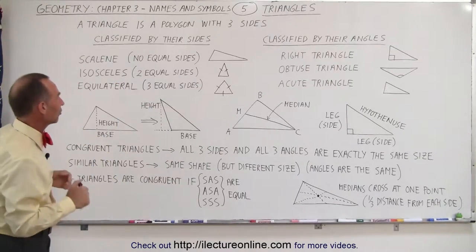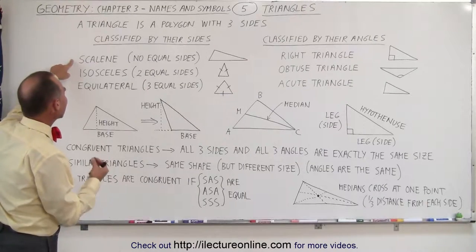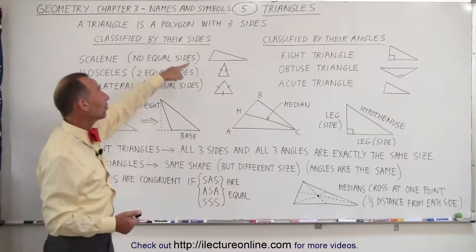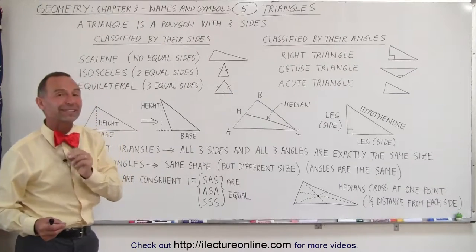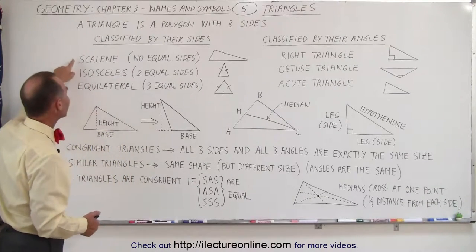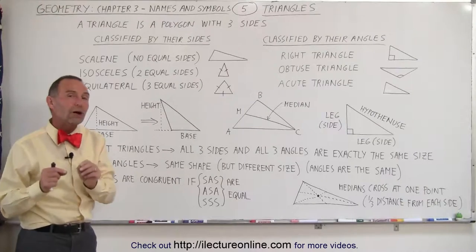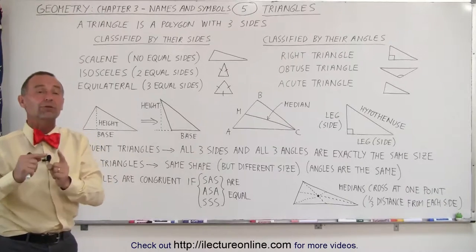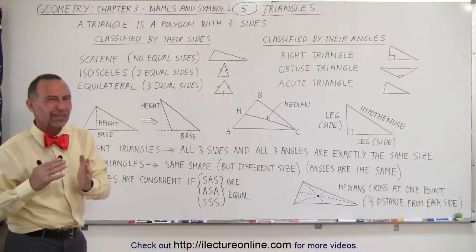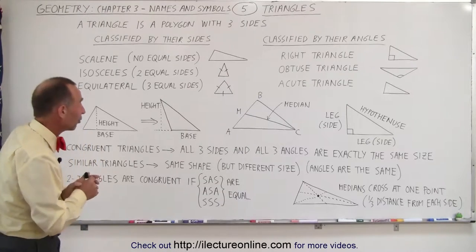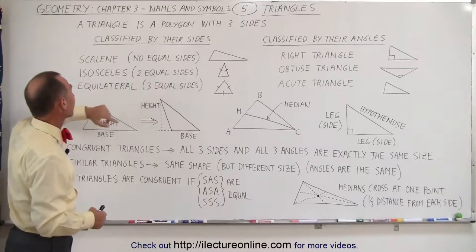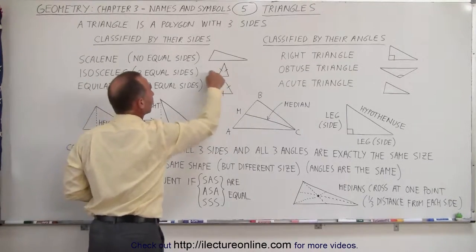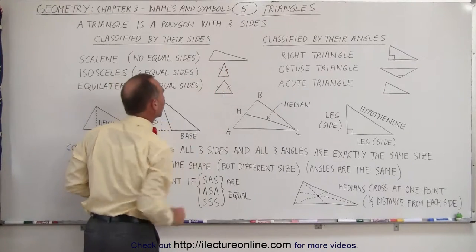In each case we have three classifications. The first one is called a scalene triangle — a name we don't hear very often — but what it means is that there are no equal sides. All three sides of the triangle are of a different length. If two of the three sides are the same size, we call it an isosceles triangle.